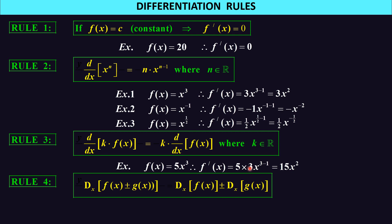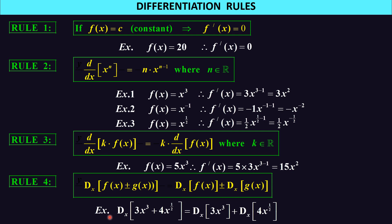These are only single terms, but I can have multiple terms. The derivative of a sum or difference is the derivative of the first term plus or minus the derivative of the second term. For example, the derivative of 3x³ plus 4x to the half gives the derivative of each: 9x² plus 2x to the negative half.